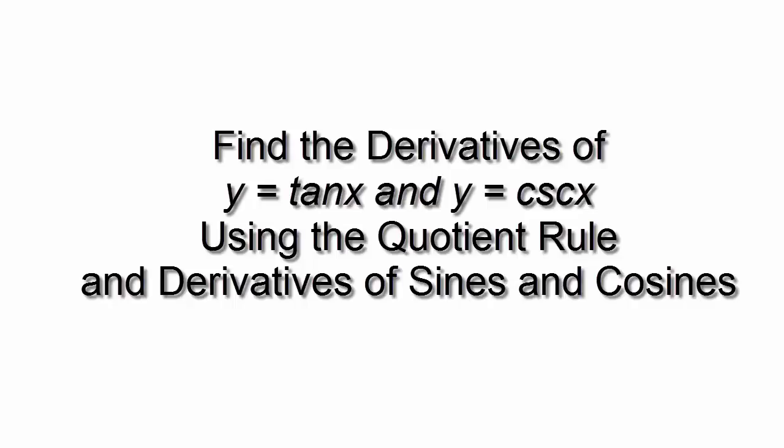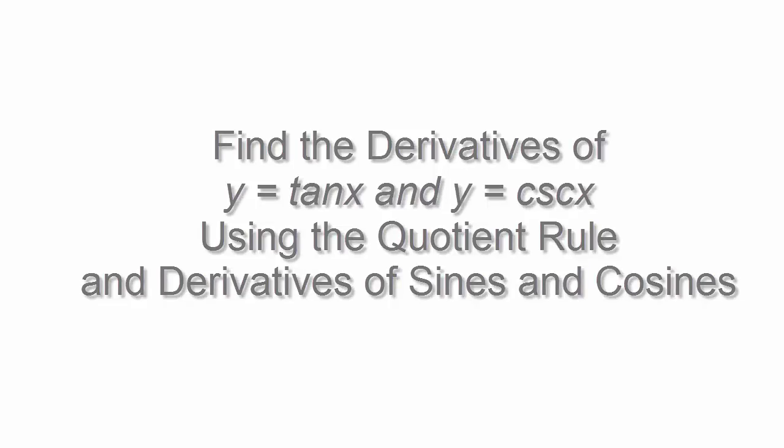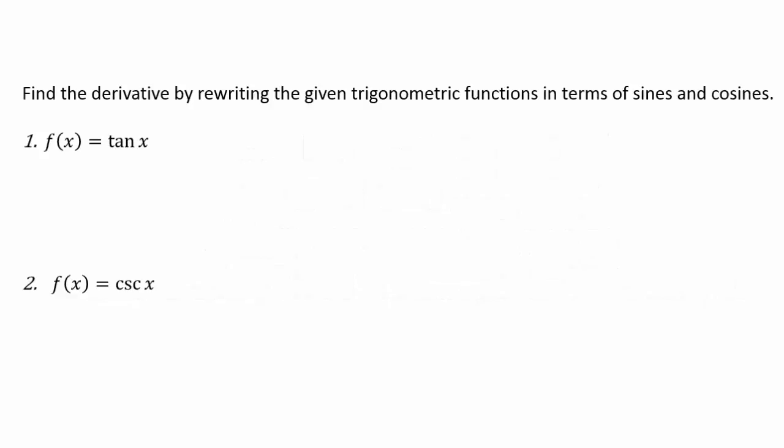Hi, I'm Ms. Hearn. Let's get started. Remember the product and quotient rules? You can use the product and quotient rules to develop derivatives for trig functions other than sine and cosine, because all the other trig functions can be written in terms of quotients of sines and cosines. So we're going to do that today. Find the derivative by rewriting the given trigonometric function in terms of sines and cosines in order to come up with a derivative.